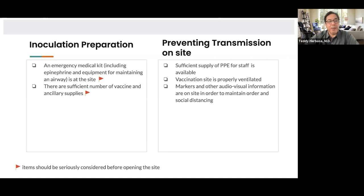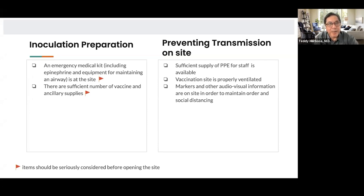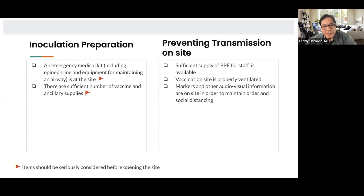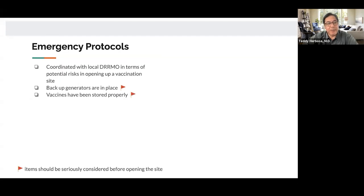For vaccination sites specifically: in case of an emergency or a reaction, you must have an available medical kit. You must have sufficient supply of both the vaccine and ancillary supplies — you can have all the vaccines from the national government, but if you don't have syringes, needles, cotton, or alcohol, you won't be able to vaccinate. You also need to check PPE for staff, ventilation of the area, and other activities. Sometimes it's that simple — one missing piece of equipment can cancel an entire operation.